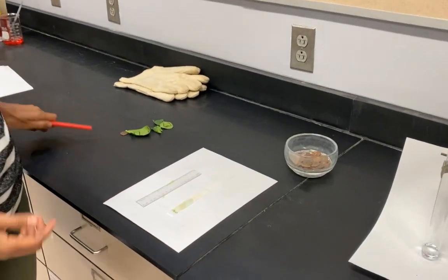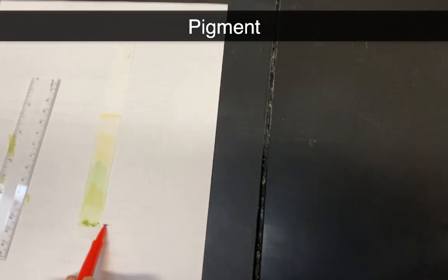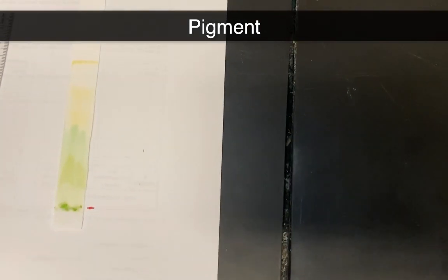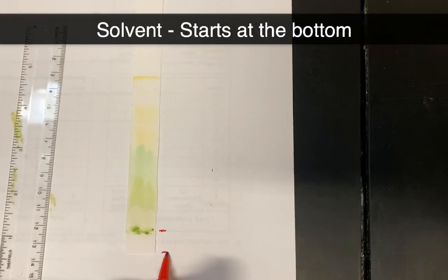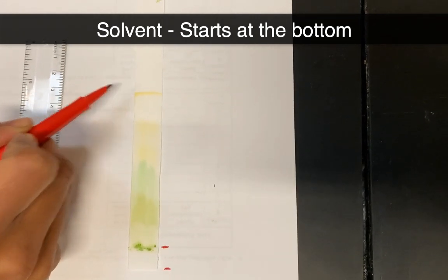And so if you remember, we had a mixture that started right over here, and that was spinach juice, which had all the different pigments that are found inside the chloroplasts. And we had our solvent that started down here and moved all the way up to this orange line.